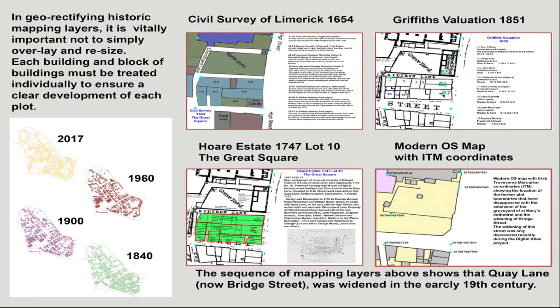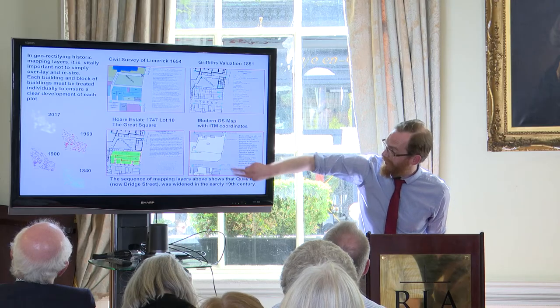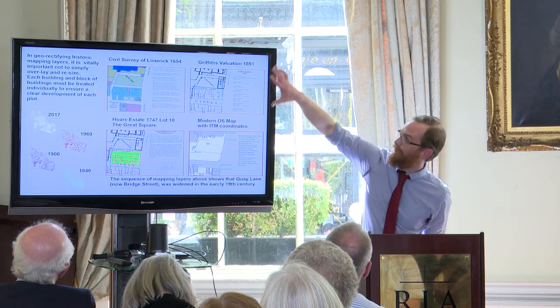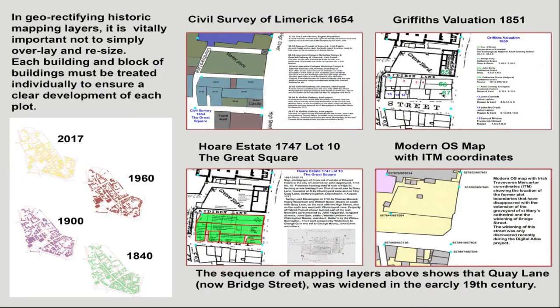In geo-rectifying maps, you can't just plunk a map on a map. You can't assume they will all line up. You have to treat it on a block-by-block basis, or by burgage by burgage, or even sometimes house by house. I have four quick maps: the modern OS map with ITM coordinates, what that would look like with the Griffiths Valuation with the 1870s map, going back further with the Hoare estate map. Something happened — all the houses wouldn't fit.